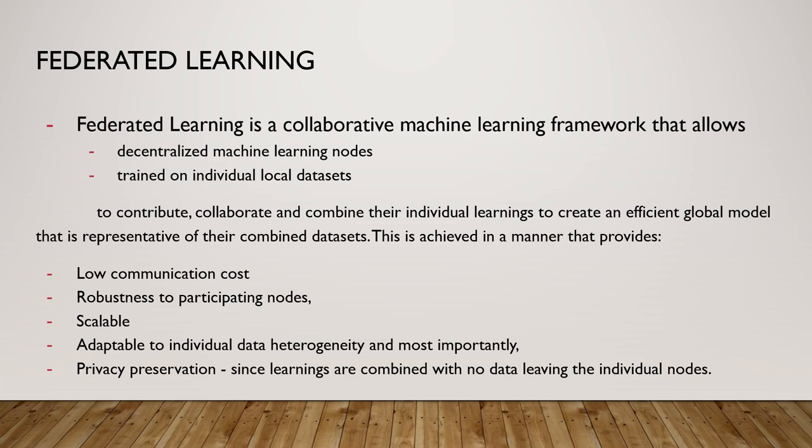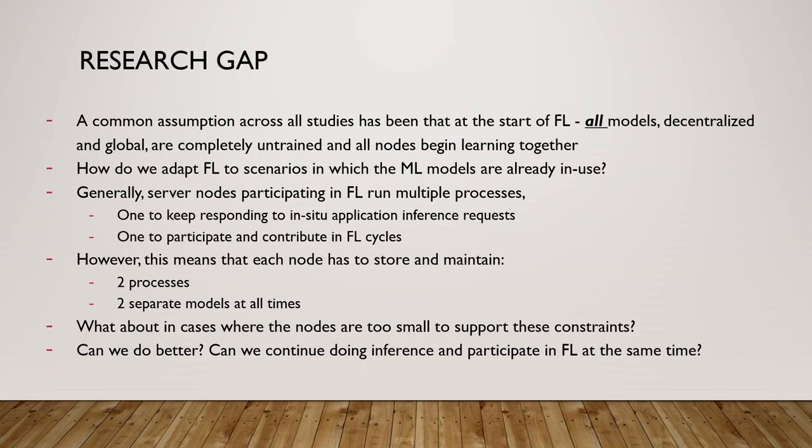Most importantly, it is privacy preserving — no data present in the local nodes ever leaves those nodes during the training phase. A common research gap we have found is that most federated learning protocols assume all training, both at the local and global level, starts when collaborative learning begins. However, how do we deal with cases where local training has already happened and models are used in application-specific scenarios? Is there a way to both contribute to federated learning and continue performing locally with high accuracy while doing so? This is the scenario we try to tackle.